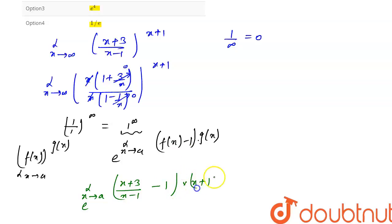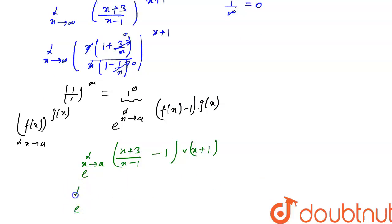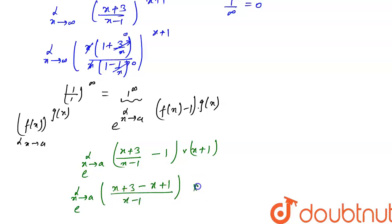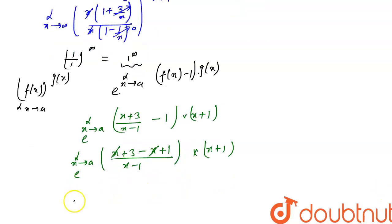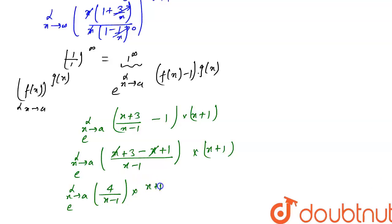So if I take the LCM, it will be e to the power limit x tends to a of (x+3 − (x−1)) upon (x−1), into (x+1). From here x and x cancel out and we will have e to the power limit x tends to a of (3+1) = 4 upon (x−1)(x+1).